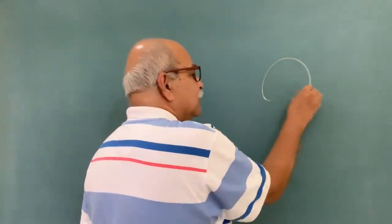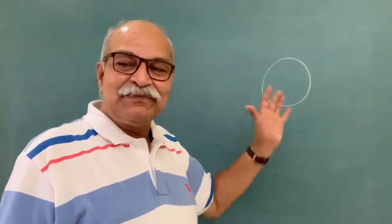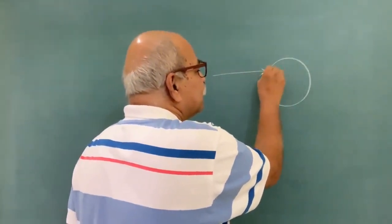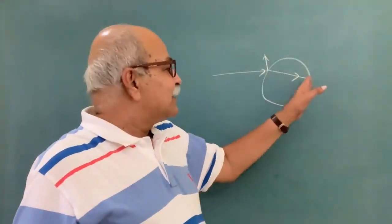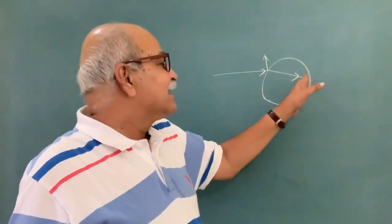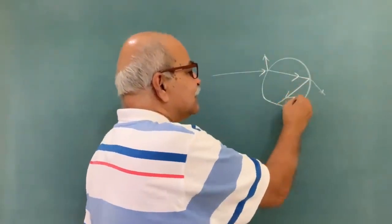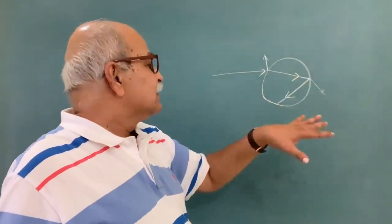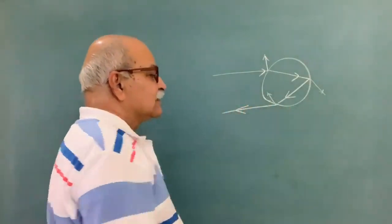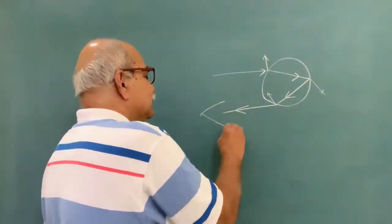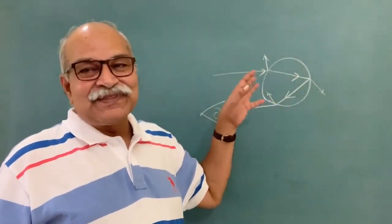You have a water droplet, and sunlight comes and then it refracts and partially reflects, then it falls on the other side of this drop. Here again we have some transmission and some reflection — part is reflected and part goes. Then here also part is reflected and part comes out, and it is this which you see. The rest are all not useful for us. That is how rainbows form.